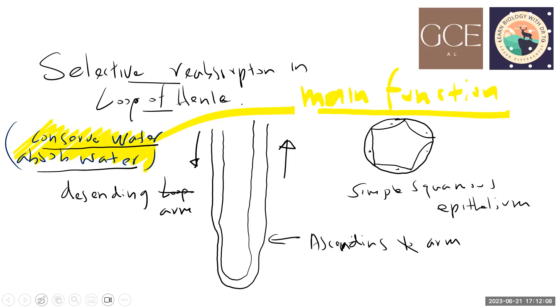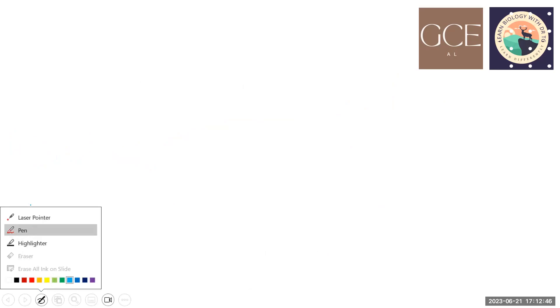The loop of Henle has a descending arm going down and an ascending arm going up. The epithelium is not cuboidal like the proximal convoluted tubule — it is more simple squamous epithelium. That was the lesson from last week, and now we continue with that knowledge to learn about conservation of water in the loop of Henle.